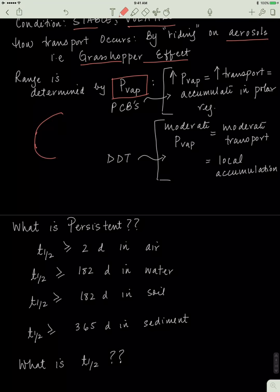It can accumulate in polar regions because if the globe is circular, it can spread around all over and start accumulating in the polar regions. Now if you have a moderate vapor pressure, that means the substance will stay about 50% gaseous and 50% liquid. For these substances, they'll just stay in the area where they were produced, so they're of a local concern.